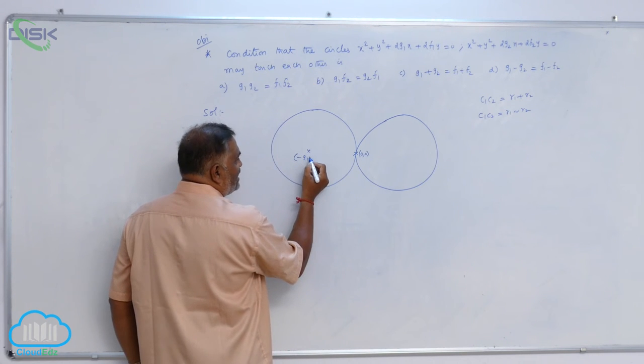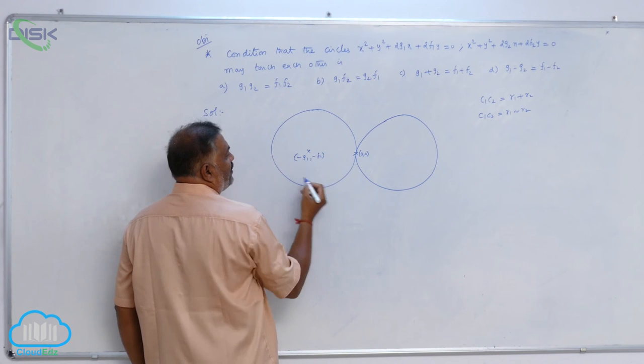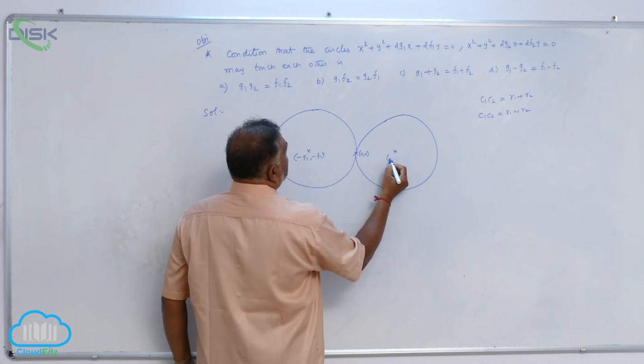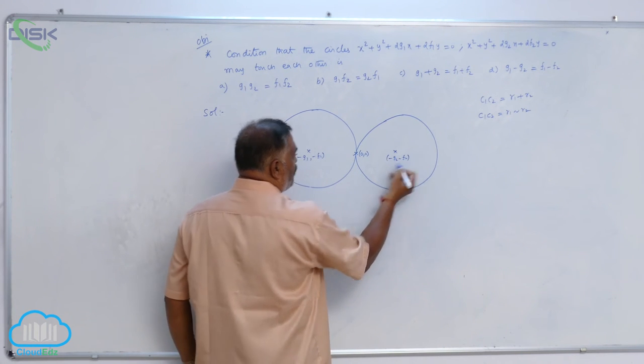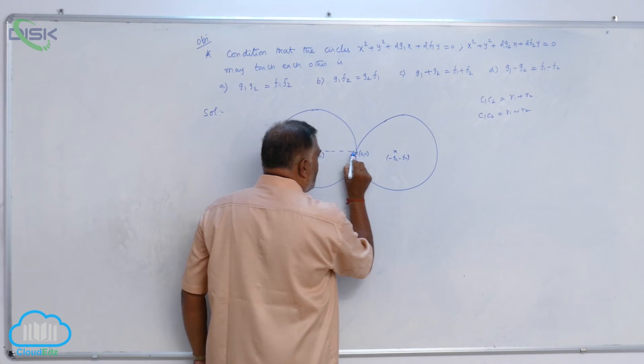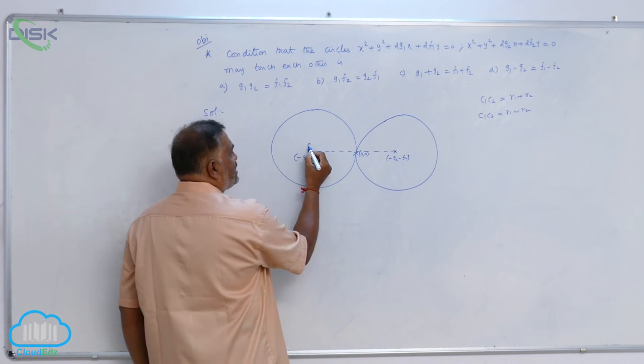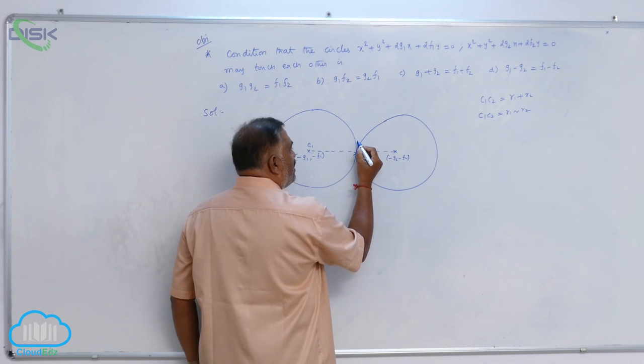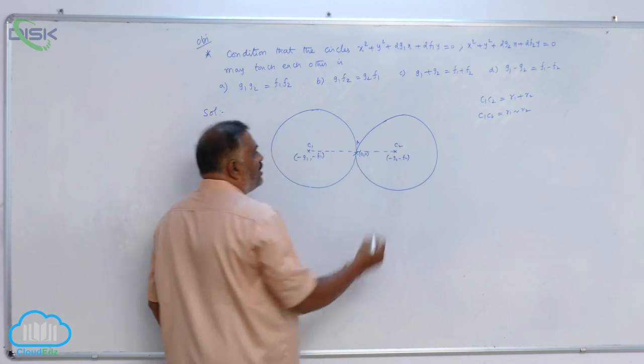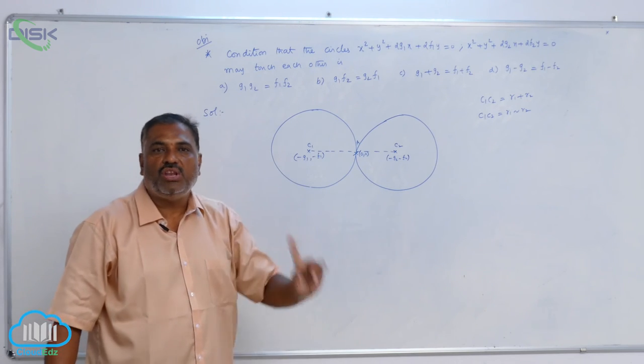Of course, the center is minus g1 comma minus f1. This is minus g2 comma minus f2. If you observe all these three points, c1, point A, and this is c2. All these three points are collinear.